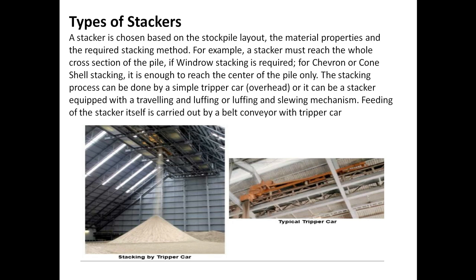The stacker is chosen based on the stockpile layout, the material properties, and the required stacking method. For example, for windrow stacking the stacker must reach the whole cross section of the pile, while for chevron or cone shell stacking it is enough to reach the center of the pile only. The stacking process can be done by a simple tripper car, or it can be equipped with a traveling, luffing, and slewing mechanism. Feeding of the stacker itself is carried out by a belt conveyor with a tripper car.